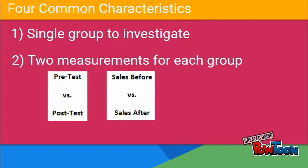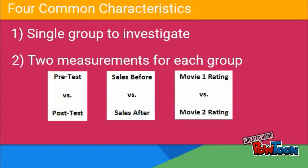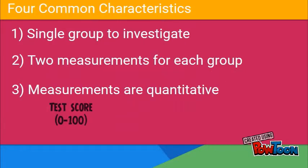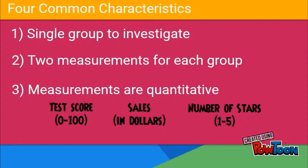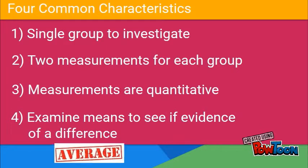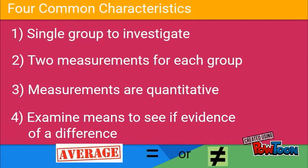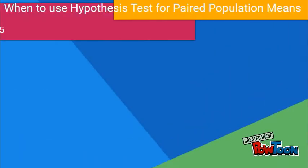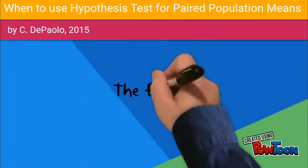Third, the measurements are quantitative. For example, test scores, sales in dollars, and number of stars are all numerical. Fourth, we are examining the mean or average of the two measurements to see if there is evidence of a difference. When these four qualities are present, a hypothesis test for paired population means is appropriate.